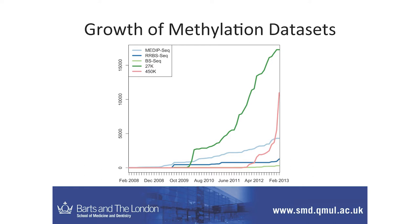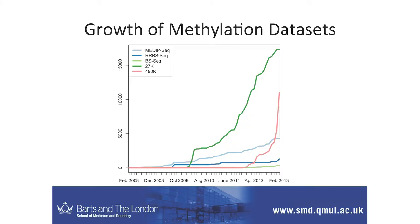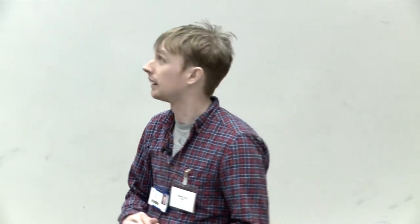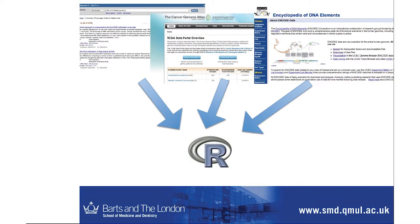We're not that far away from having more 450K data than 27K data. And of course, as has already been discussed, there are other examples such as sequencing-based data. But the key problem is the number of samples that can be done and the cost. So our plan is essentially to take everything that is publicly available and make it a lot more accessible for people to use in their studies.